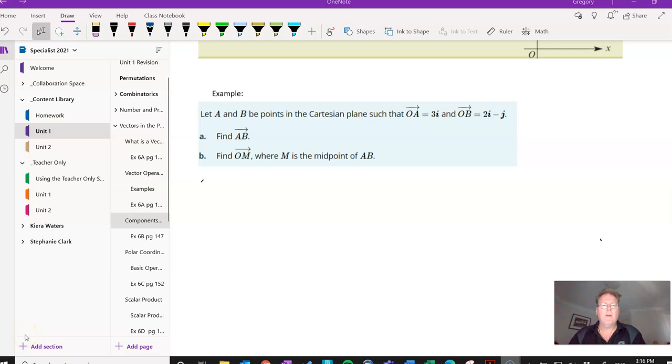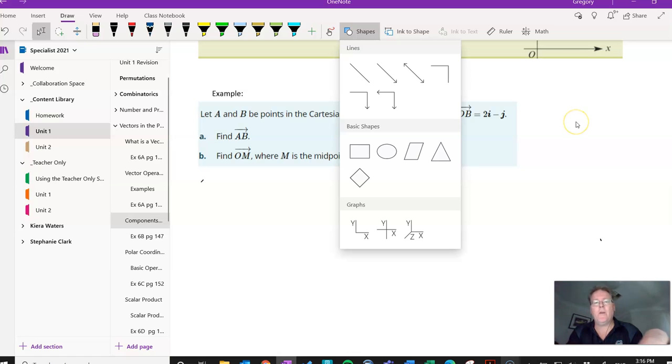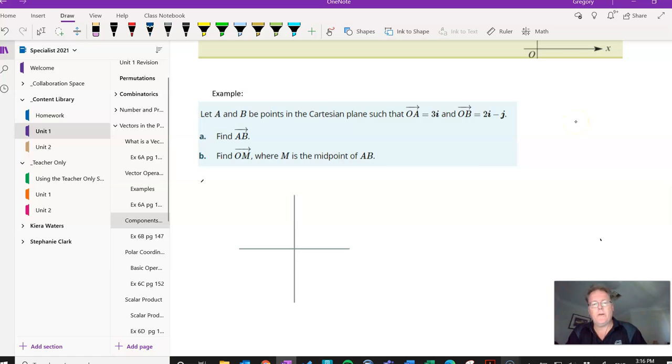So let's have a look at an example. We've got here A and B, points in the Cartesian plane, such that OA is 3I and OB is 2I subtract J. Let's quickly open my pen work and open up a Cartesian plane, and we'll draw on these two vectors.